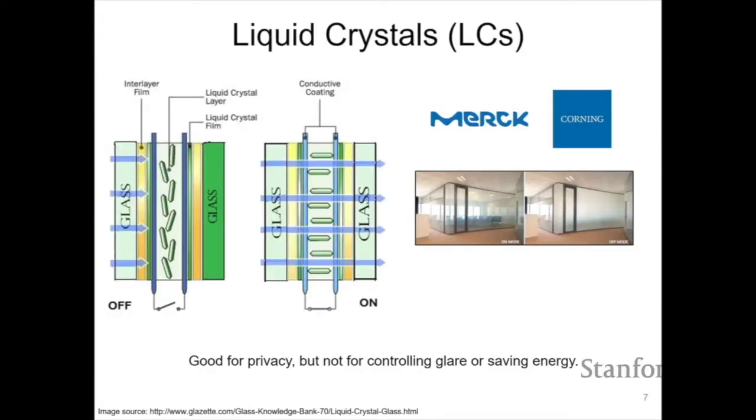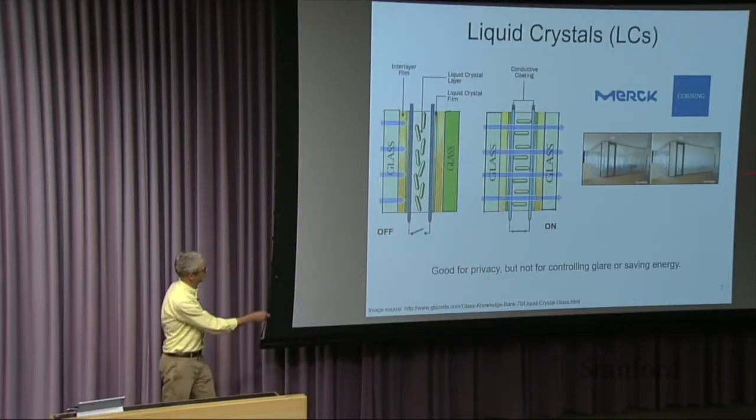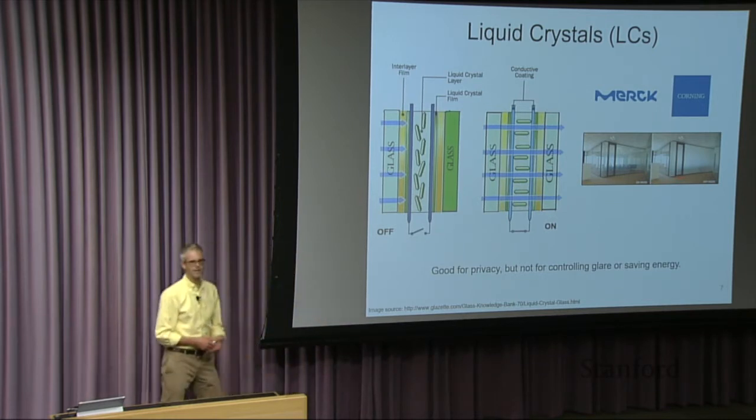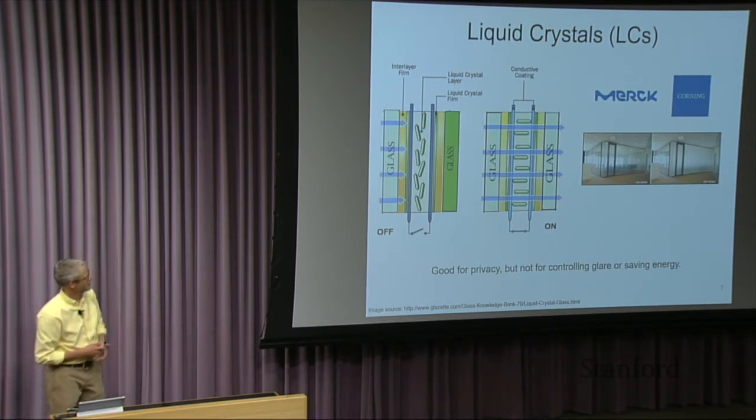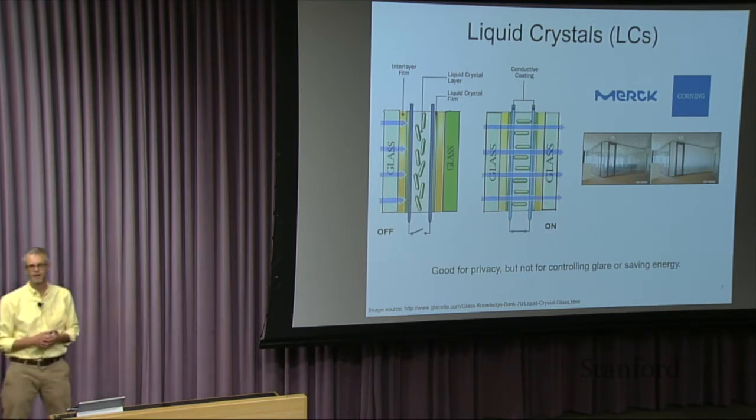Another technology that it's been available for at least 30 years, but I personally have never seen it, which means that it certainly hasn't caught on very well, are liquid crystals. And these are molecules where the refractive index is different in one direction compared to the other. And if you line the molecules up, you can get a state where light goes through unscattered and it's clear. And in the other state, it scatters. But it really doesn't work for energy efficiency. It's just for privacy. All it really does is scatter up the light. So you might use it if you want privacy in a conference room. But it doesn't really solve the problem that a lot of people want to solve.